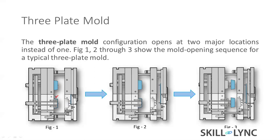The three-plate mold is a more complex construction. You can see this is a cross-section - the blue color portion is the feed system, which allows the molten material to pass from the injection molding machine through the feed system to fill the cavity. While opening, it opens the first half, then the second half - the feed system is separated from the part. After that the ejection mechanism ejects the part and it falls down. This is the three-plate mold configuration and sequence.